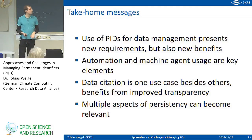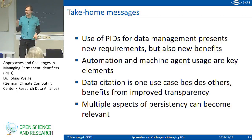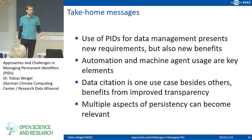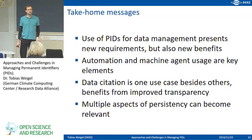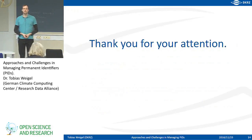My take-home messages: The use of PIDs for data management, making object connections, and putting a name to every object — not just talking about files and file systems — puts up new requirements but also possible benefits. One is making sure there is transparency and that objects are understandable. Automation and machine usage are key elements — this is the main benefit for dealing with growing numbers efficiently. Data citation is one use case besides others, but of course it benefits from improved transparency. These multiple aspects of persistency have to be understood well and may still become relevant when building services in the future.